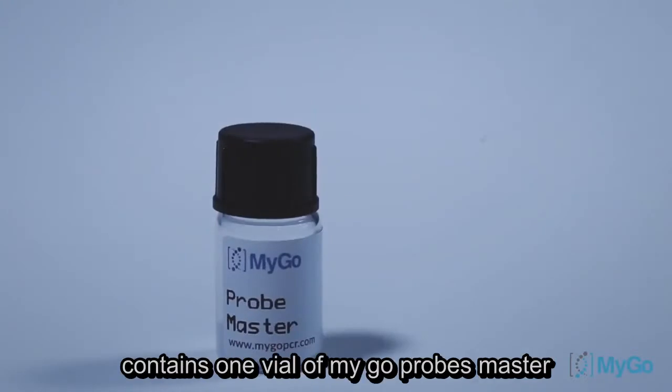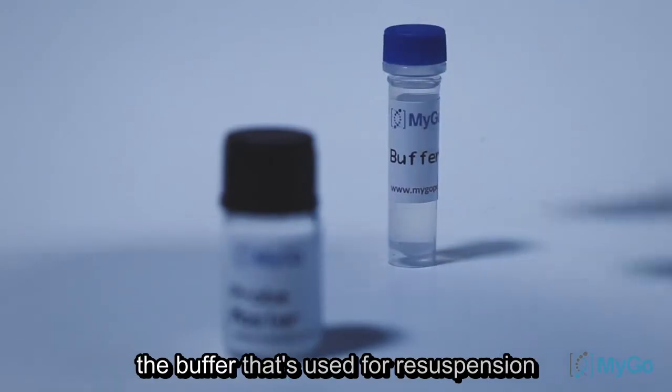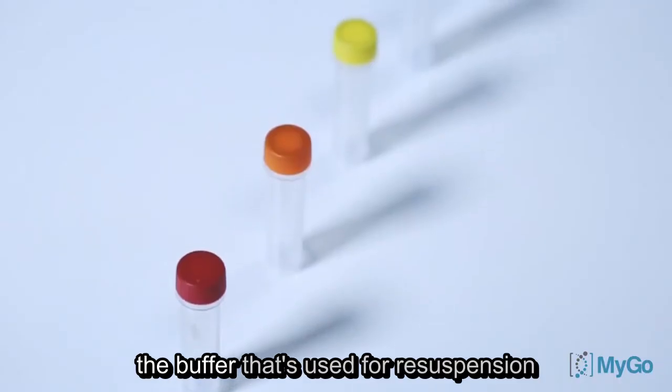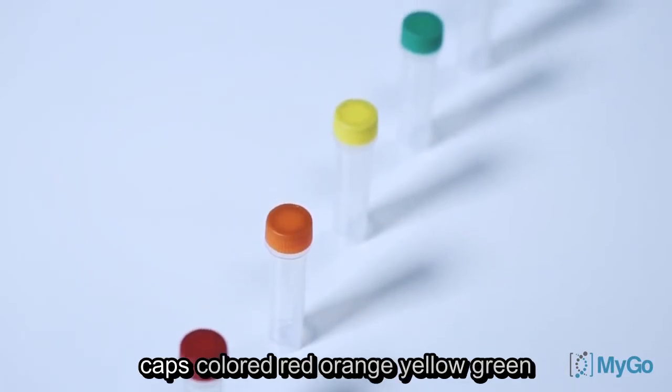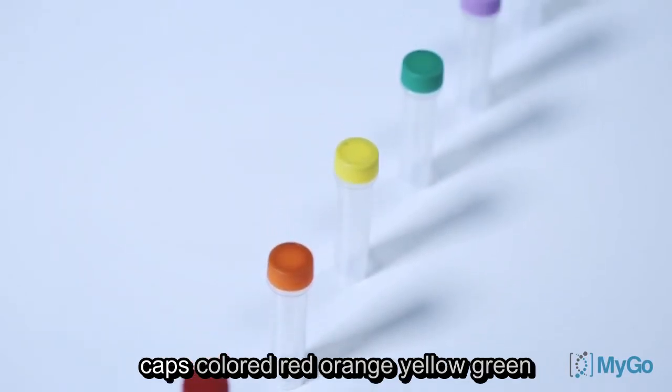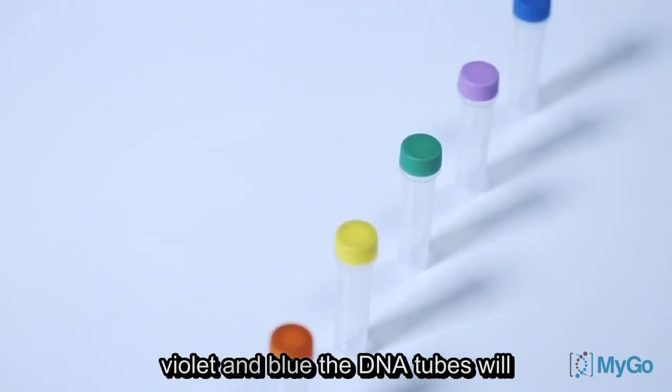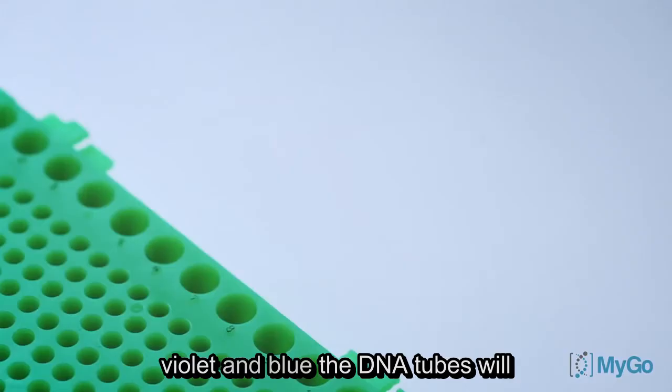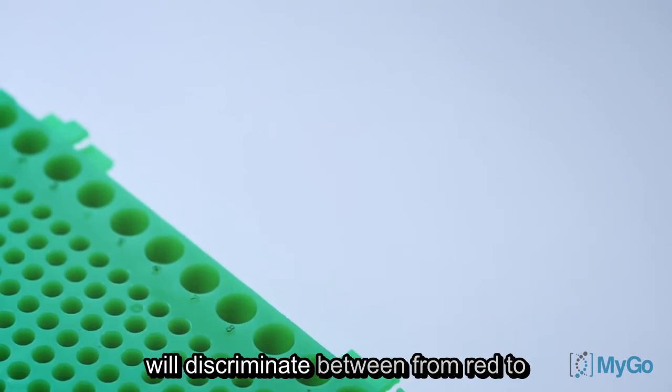The kit contains one vial of MIGO Pro's master, which is a lyophilized master mix and a buffer that's used for resuspension. The kit also contains six DNA tubes with caps colored red, orange, yellow, green, violet and blue.